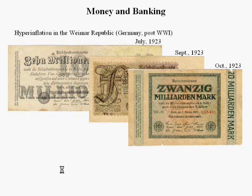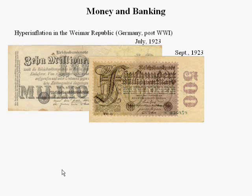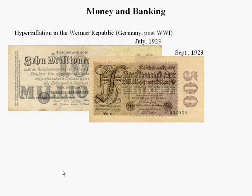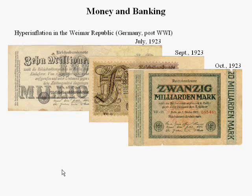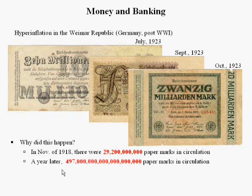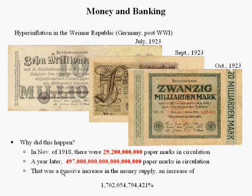So this represents more marks than it appears. That's what happens when central banks have printed so many marks that they have to start erasing zeros. Why did this happen? In November 1918, there were 29,200,000,000 paper marks in circulation. A year later there were vastly more — a massive increase of about 1.7 trillion percent in the money supply. When you're printing that kind of money with the printing presses running non-stop, you're going to have serious hyperinflation.